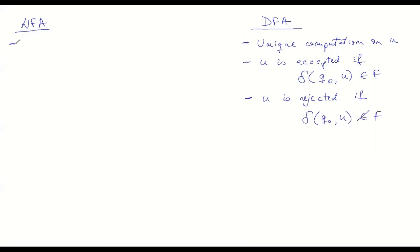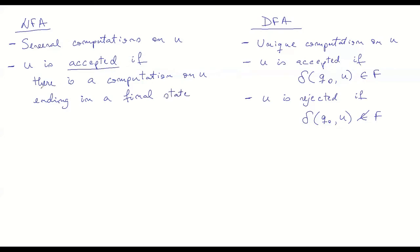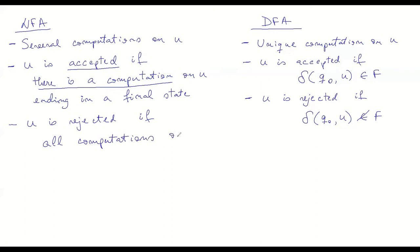In non-deterministic finite automata we have several computations on an input word u. We say u is accepted if there is at least one computation on u ending in a final state. We say u is rejected — the negation of that condition — if all computations on u end in a non-final state.